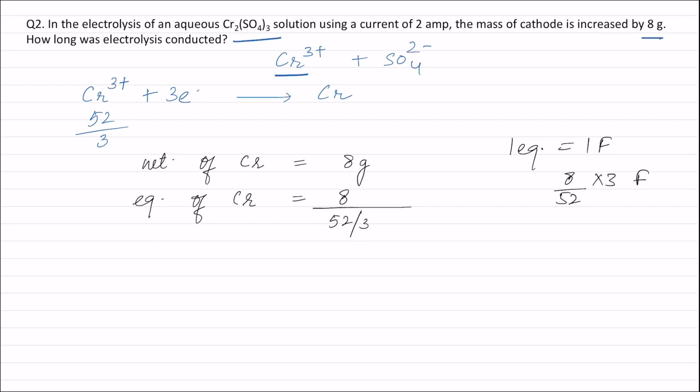Now we know that one Faraday is equal to 96,500 coulombs. Therefore, 8 by 52 into 3 into 96,500 coulombs.